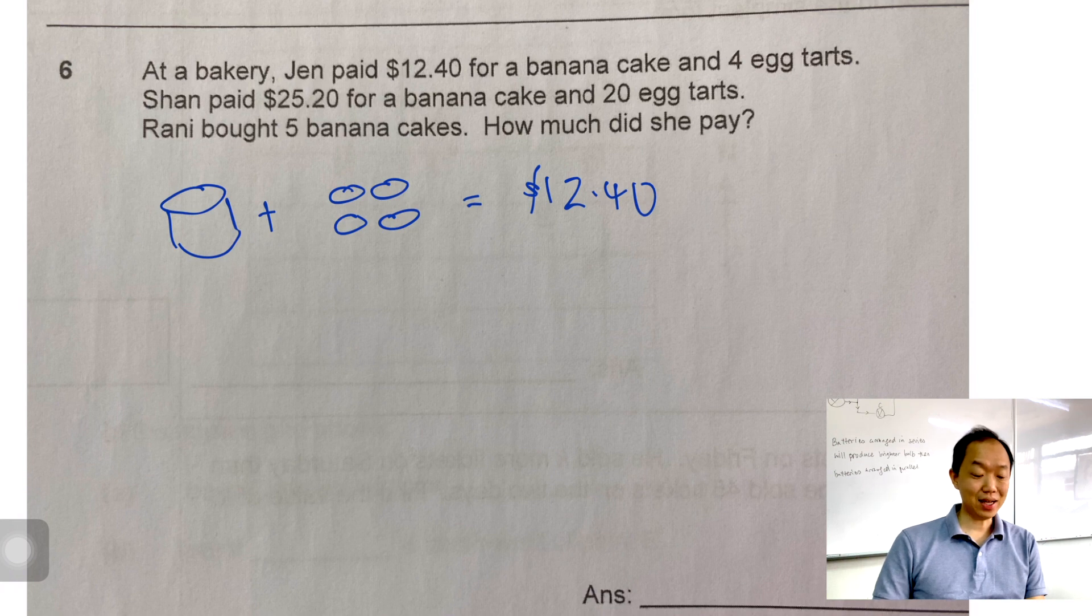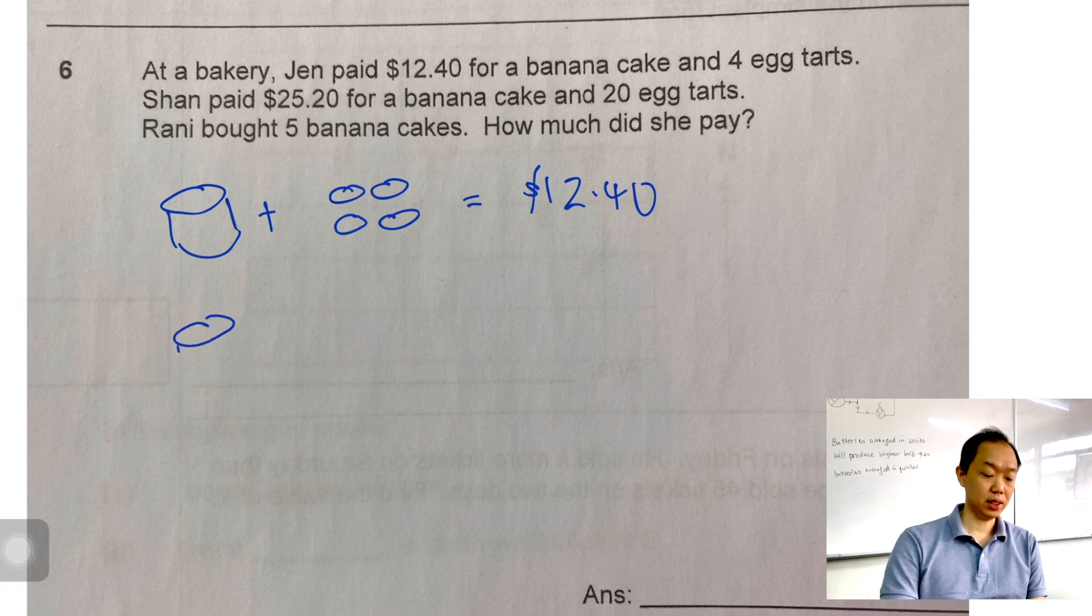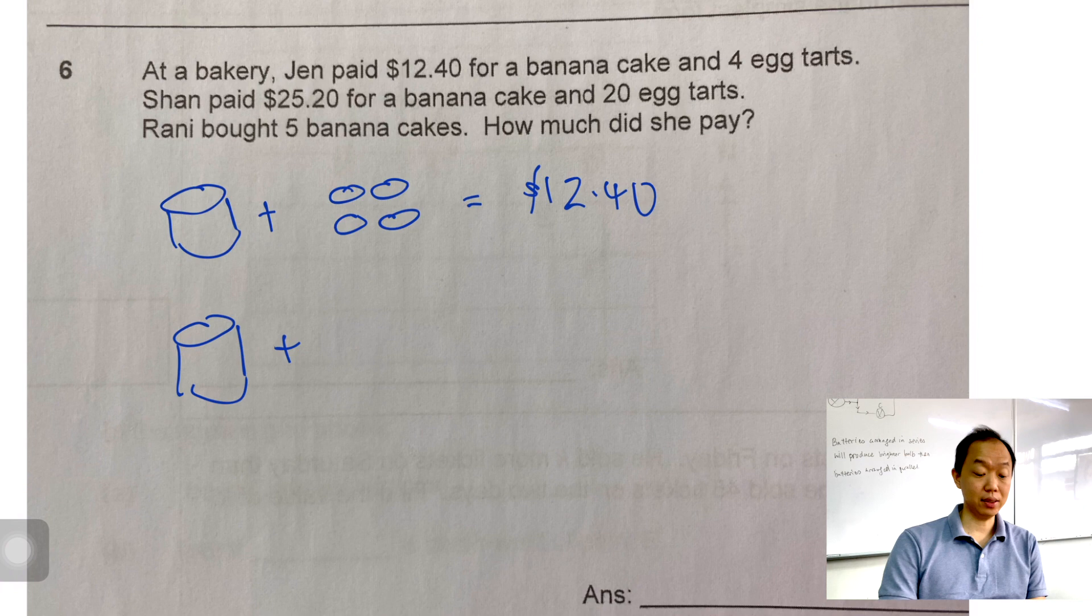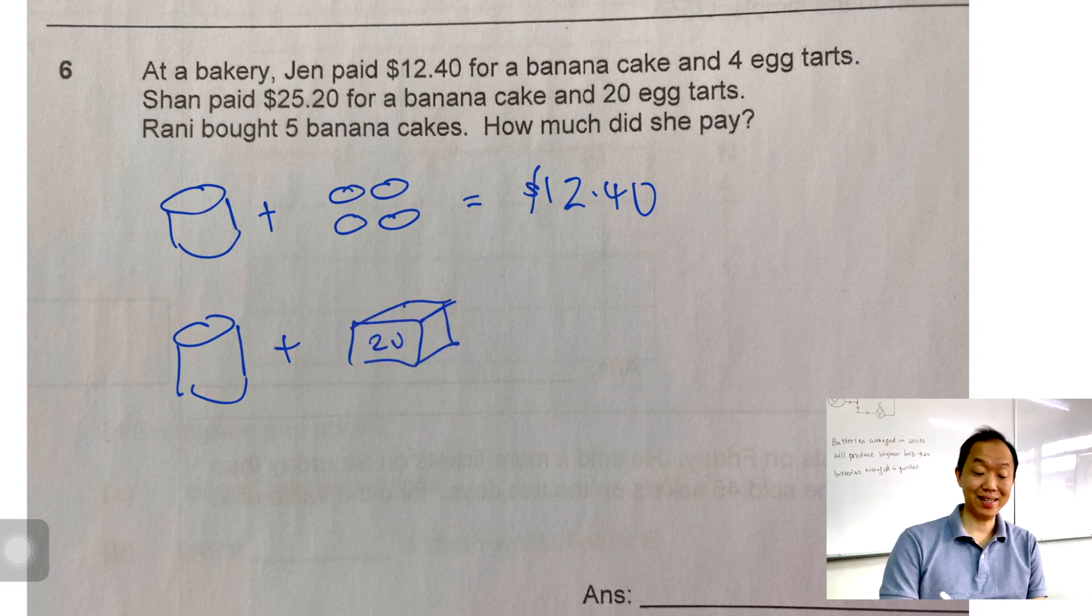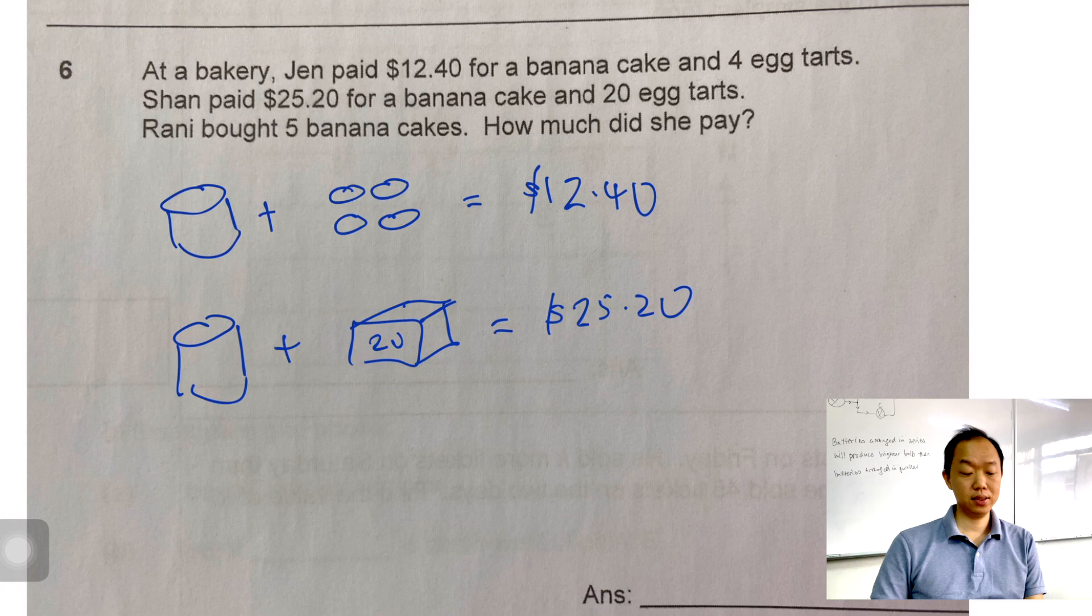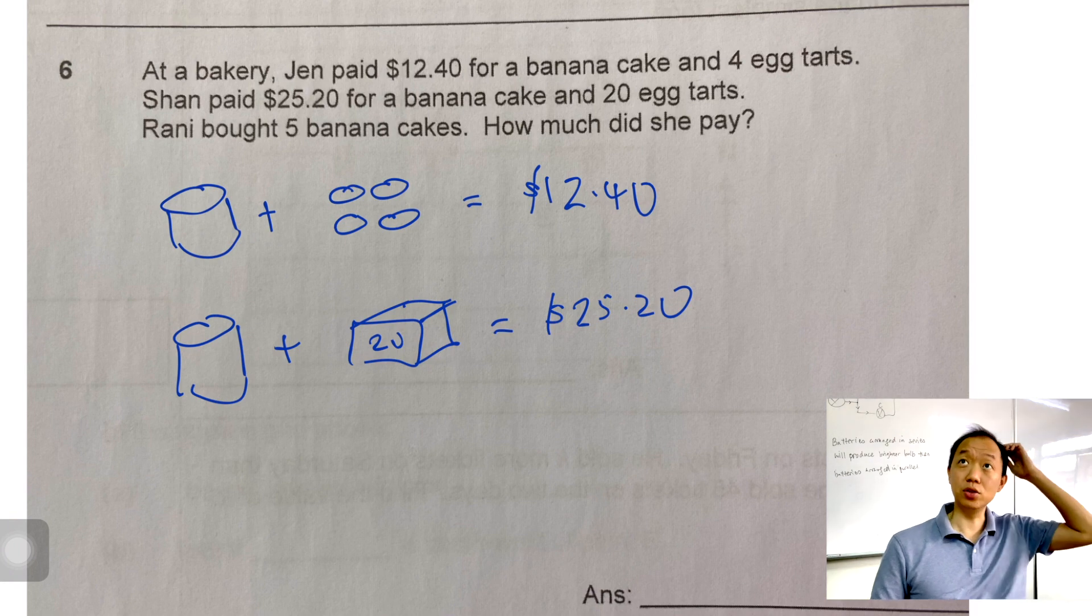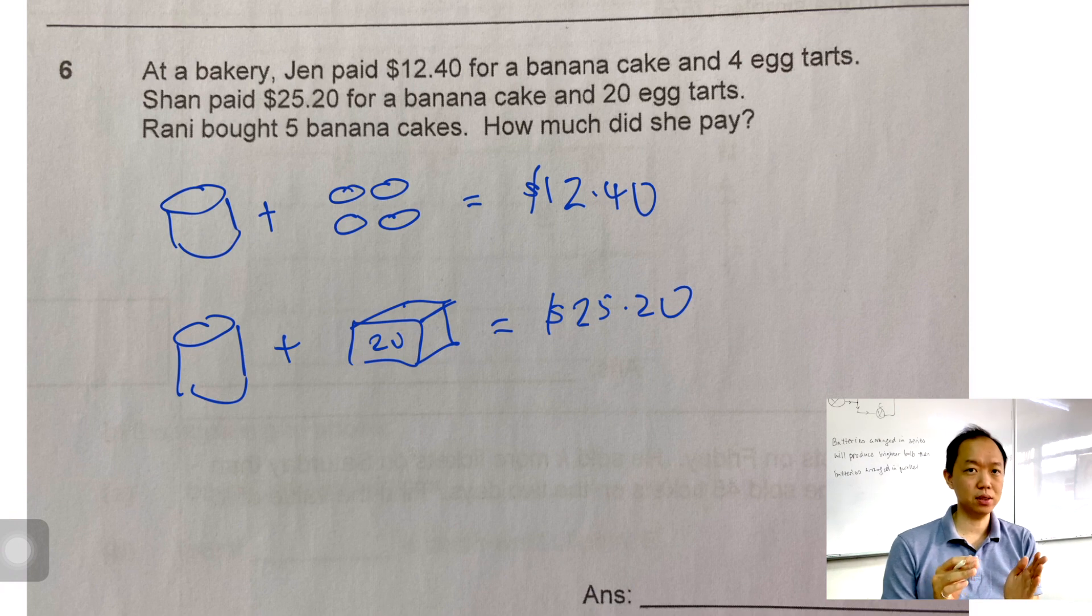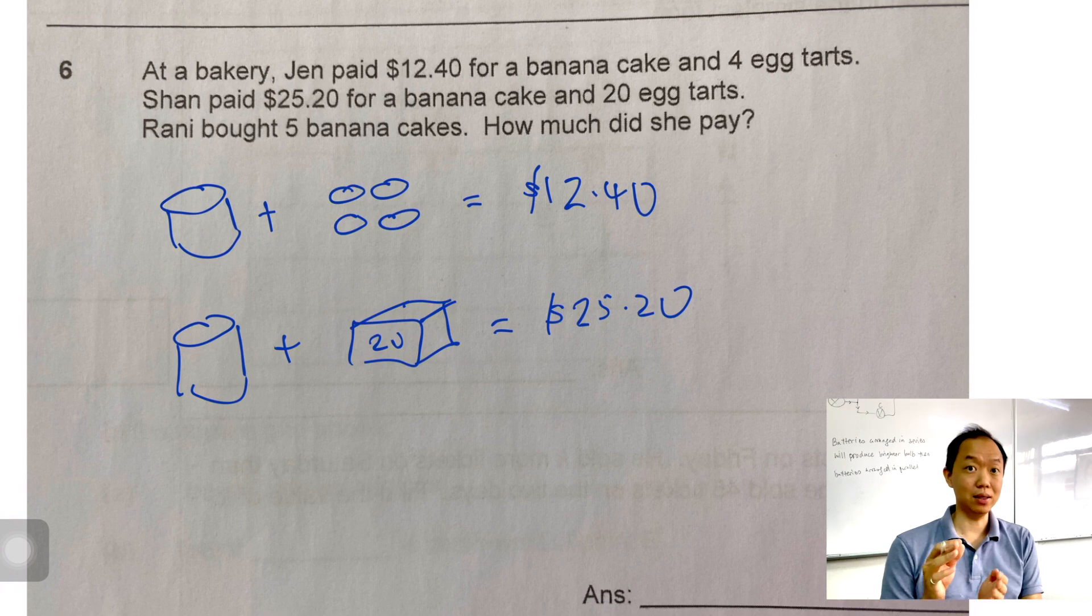Sean paid $25.20 for a banana cake and 20 egg tarts. So Sean plus 20 of them. I'm not going to draw 20, I'll just draw one box. So one box has 20 egg tarts. So that costs $25.20. So Rani bought five banana cakes. How much did she pay? So this is what we call a units and parts question. It's a simplified units and parts question. For units and parts question, what you need to do is to make one of the variable the same. In this case, the banana cake is already made the same.